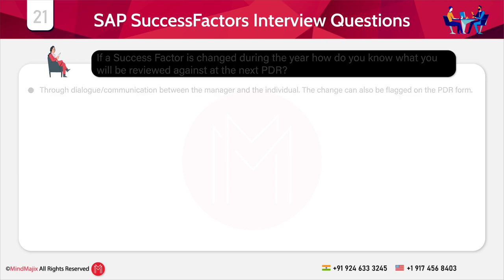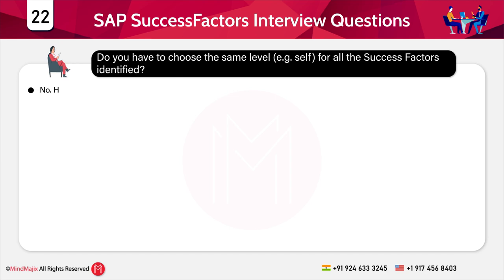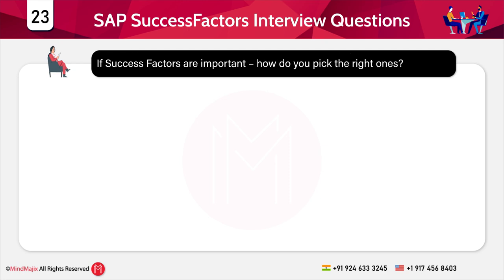The next question is: do you have to choose the same level for all of the success factors identified? The answer is no; however, it may be that they tend towards one particular level.